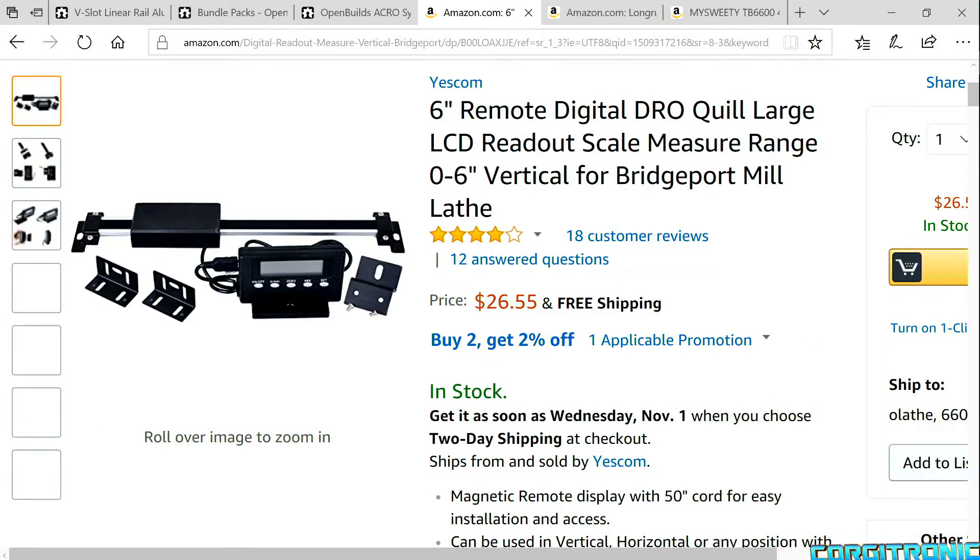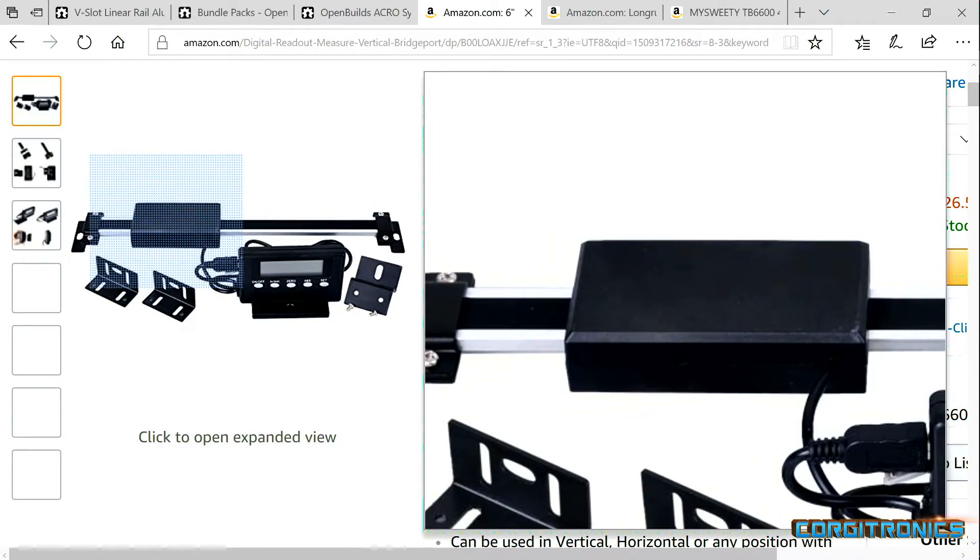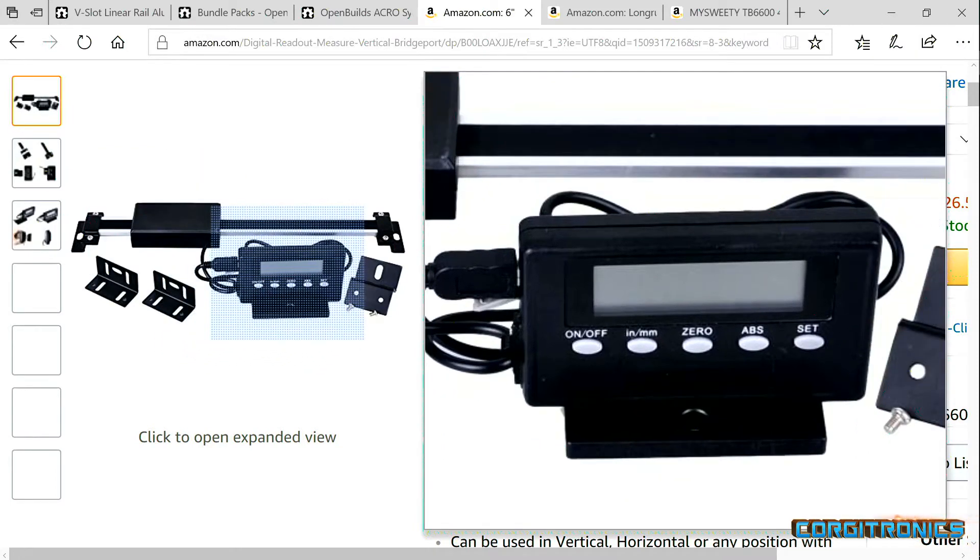What this does is it allows the user to mount this set of rails on the machine and then connect the black case to whatever is going to be moving around—in this case, a small arm which will measure the length.